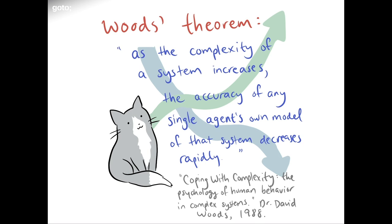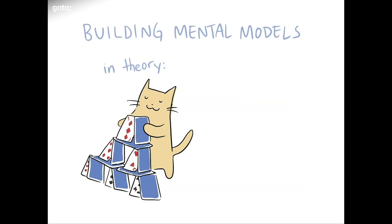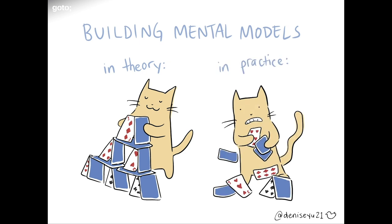Wit's theorem: as the complexity of the system increases, the accuracy of any single agent's own model of that system decreases rapidly. This matters enormously because if our systems are getting more complicated, it means we're getting worse at modeling them, understanding them, diagnosing them, debugging them, fixing them. As humans operating big and invisible systems, we all maintain mental models — some conceptual understanding and set of assumptions about what we think is happening. We tend to think of mental model building as neatly stacking new information on top of foundational knowledge. But in reality, we don't always have the time and resources to do this — underlying context shifts, or our assumptions are proven wrong.